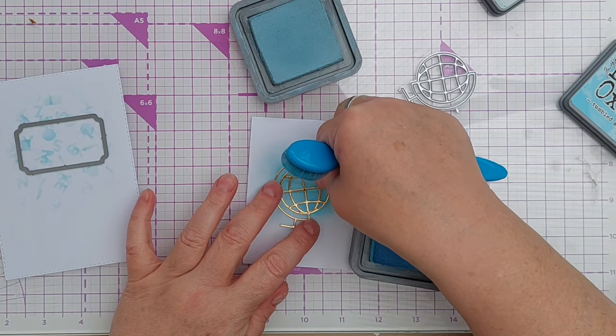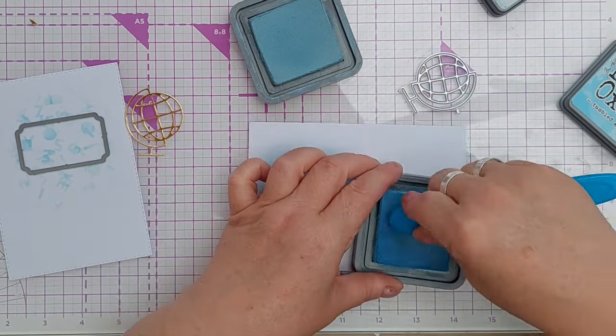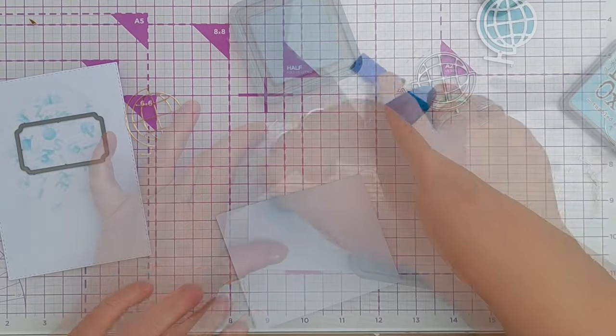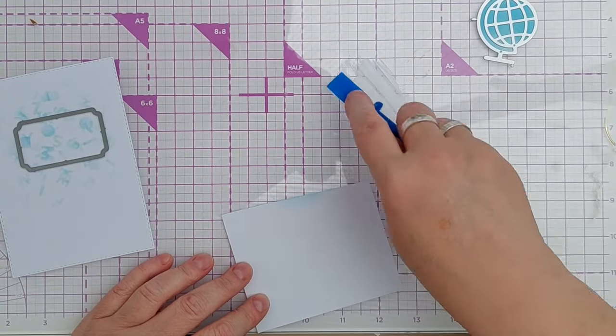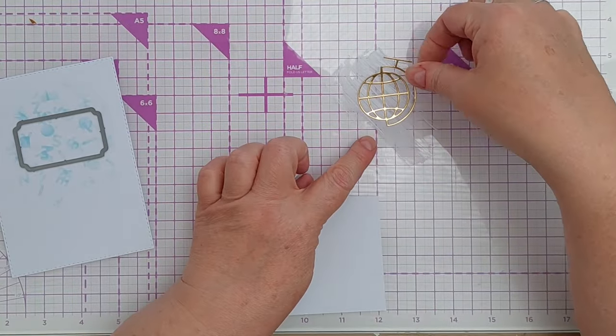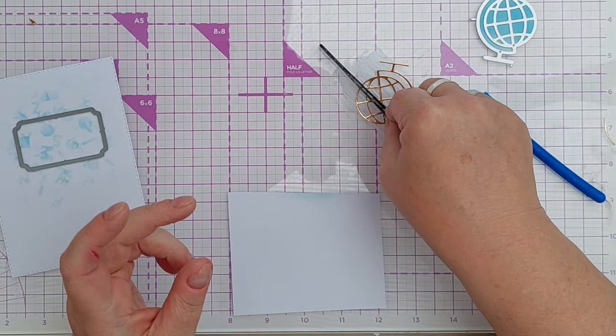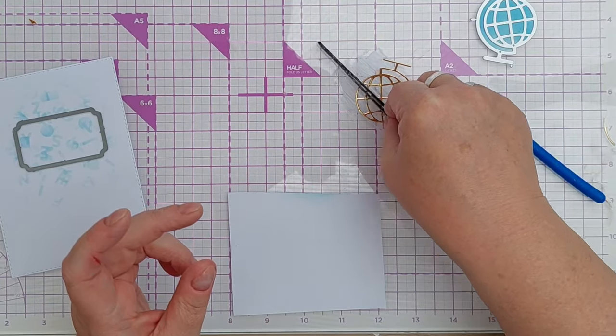Once I was happy with my blending, I dipped my globe into some glue and stuck it down onto another piece of smooth white cardstock to back my die cut. Then I used my detail scissors to cut around it so that it was not visible around the edge of the globe part.